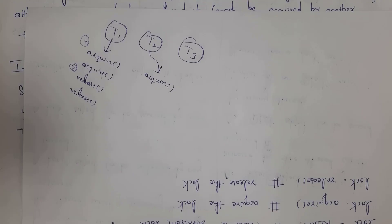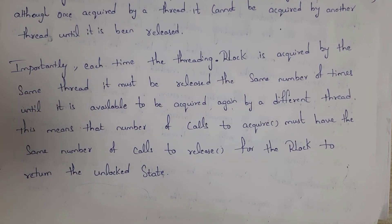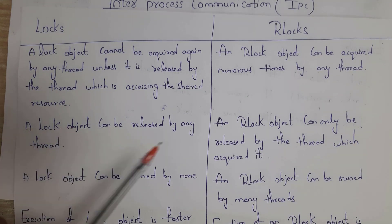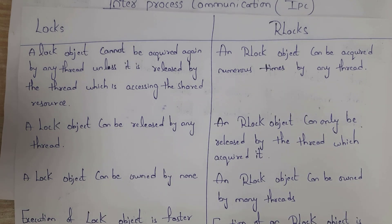How many times you call the acquire method, that many times you need to call the release method. A Lock object can be acquired only once, whereas an RLock object can be acquired numerous times. A Lock object can be released by any thread, whereas an RLock object can only be released by the thread which acquired it.